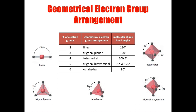This table shows the five geometrical electron group arrangements that you are required to know. The first is called linear, with two electron groups separated by 180 degrees. The second is trigonal planar, with three electron groups evenly spaced in a triangular shape. The third is tetrahedral, with four electron groups arranged like a tripod. The fourth is trigonal bipyramidal, with five electron groups arranged like two triangular pyramids stacked base to base. And lastly, octahedral, with six electron groups arranged into a shape that has eight sides.